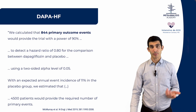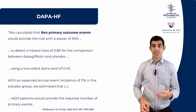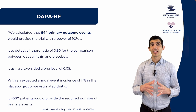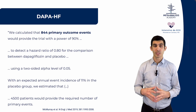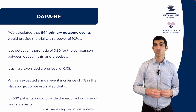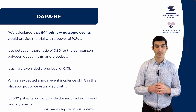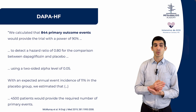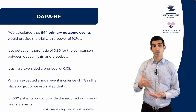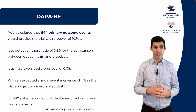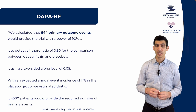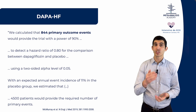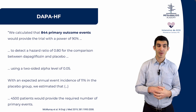I'm going to bring an example and discuss using it. This is a report from the DAPA-HF trial — a trial evaluating the use of dapagliflozin in patients with heart failure. In their methods, they calculated 844 primary outcome events that would provide a power of 90%. Let's talk about each of these points so you can understand what a primary outcome is.